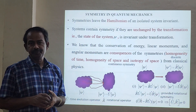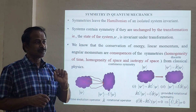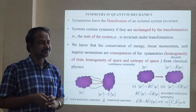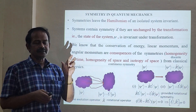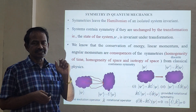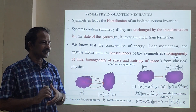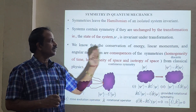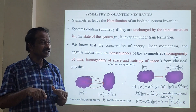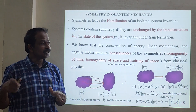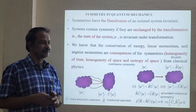Homogeneity of time means time will be constant and unique. For example, if you take a system and measure it today — whether you measure energy, linear momentum, or angular momentum — you will get some results. And if you measure it tomorrow, it will be the same. This is called homogeneity of time.